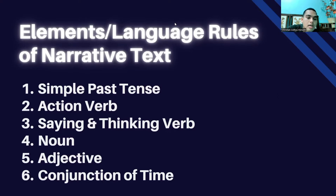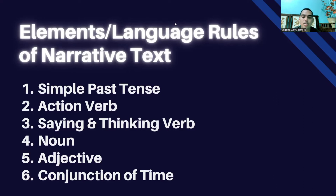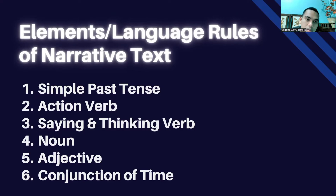Next are saying and thinking verbs. In addition to action verbs, other verbs that often appear in narrative text are saying and thinking verbs. A saying verb is a type of verb to indicate the act of speaking — for example, 'tell' or 'say.' Meanwhile, a thinking verb is used to inform the reader about what the character thinks about an event in the story. An example of a thinking verb is 'thought.'